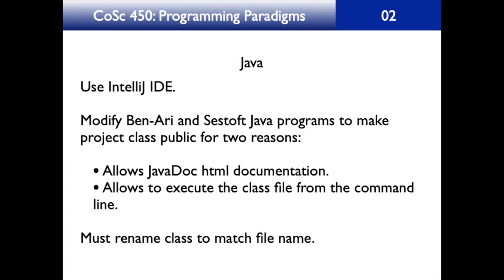It also allows us to execute the class file from the command line, so that we can take input from the main program like we did with C++. Another thing we are going to do is rename the class to match the file name. Standard practice is to have one class per file, and the file has the same name as the class. That is a coding convention we are going to follow, so we will modify the code slightly from these two books.